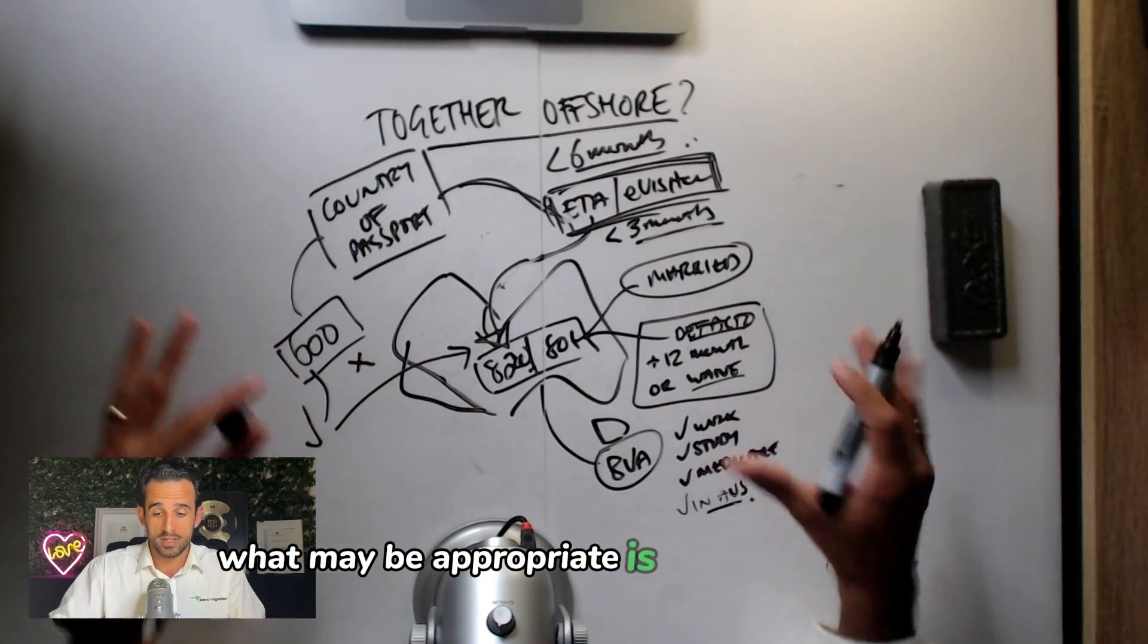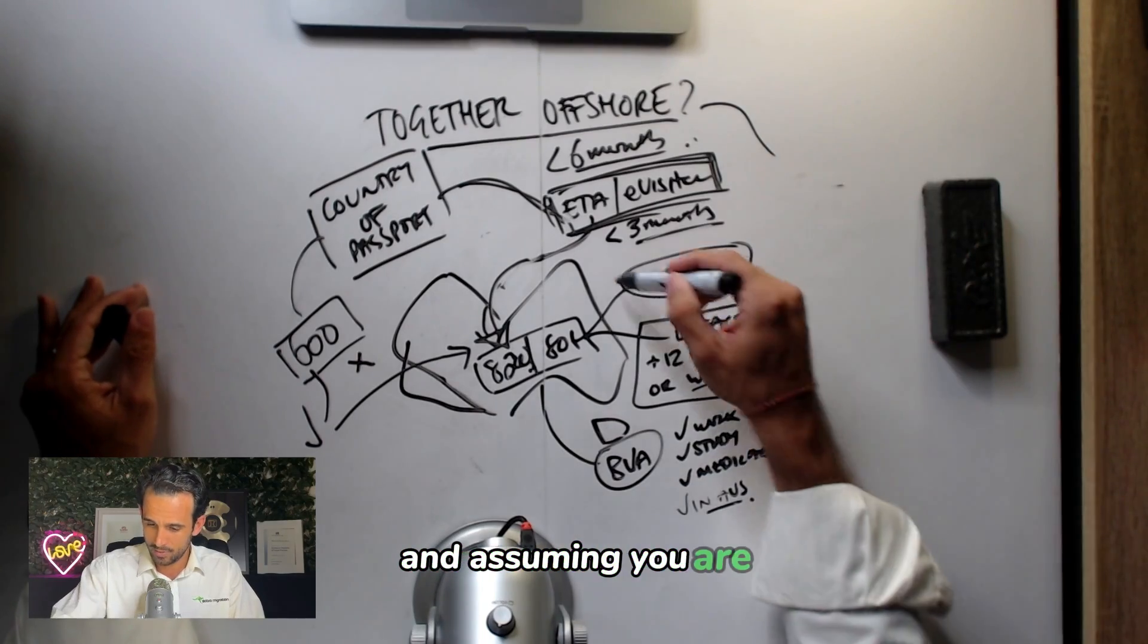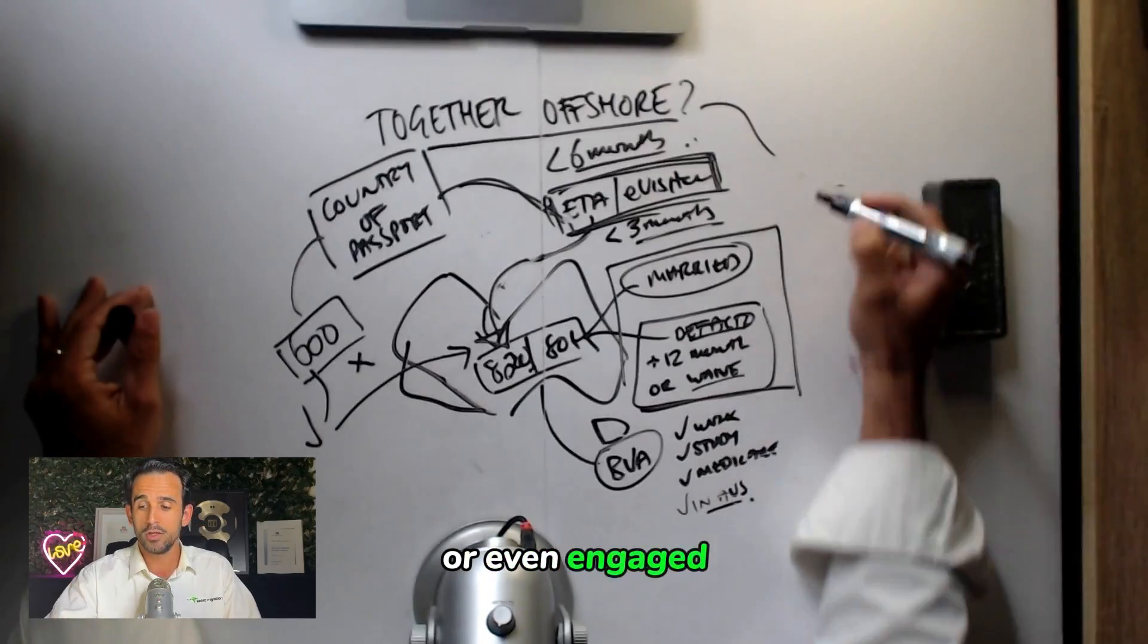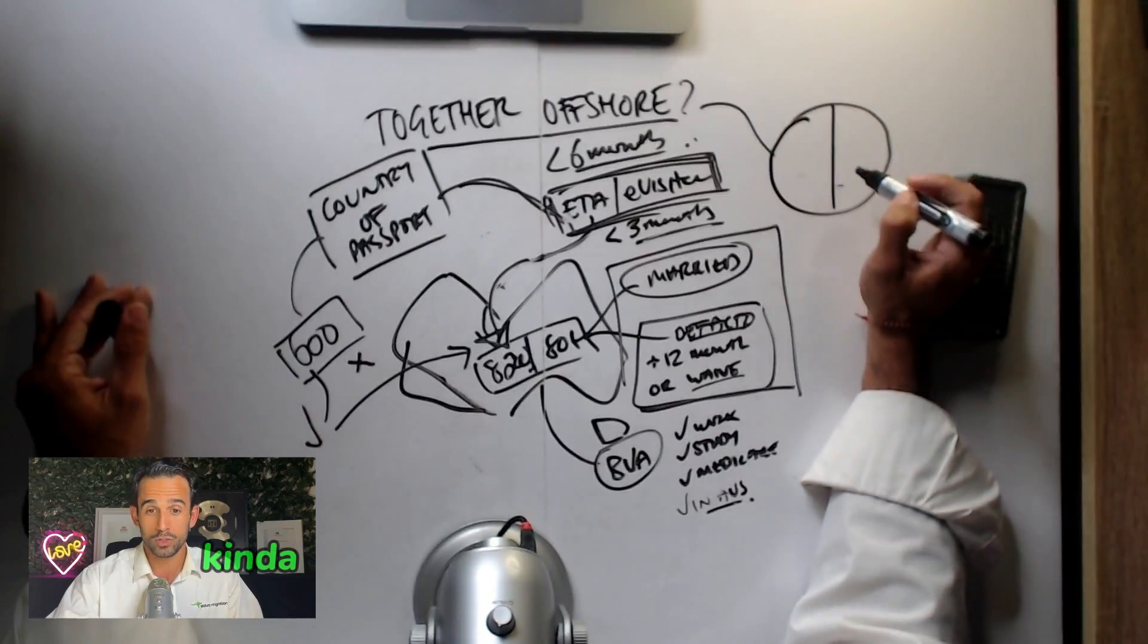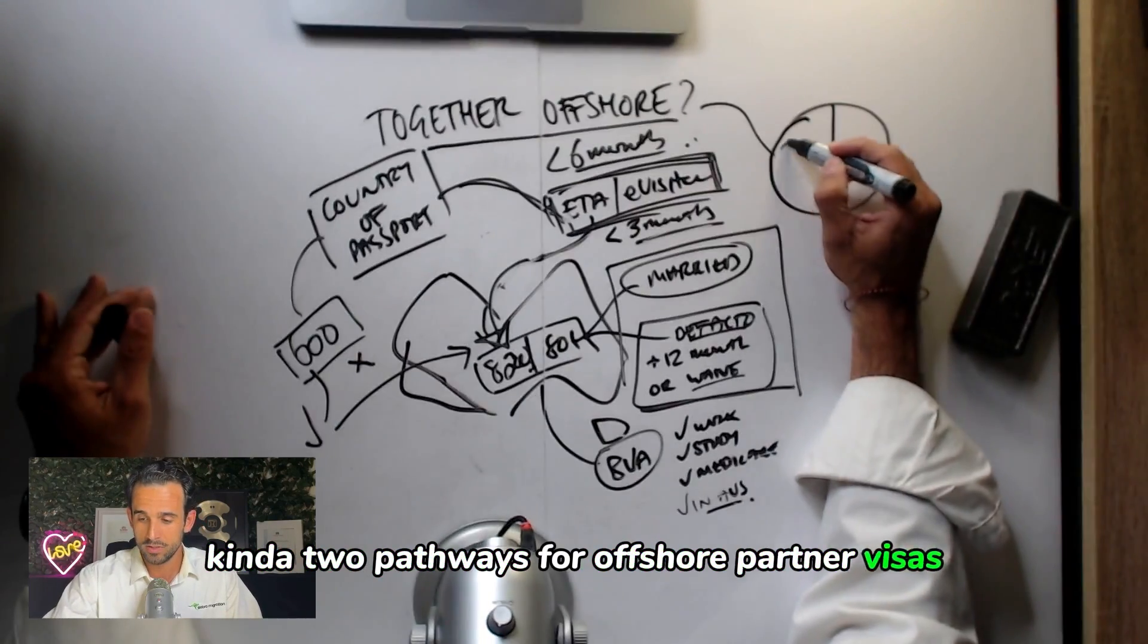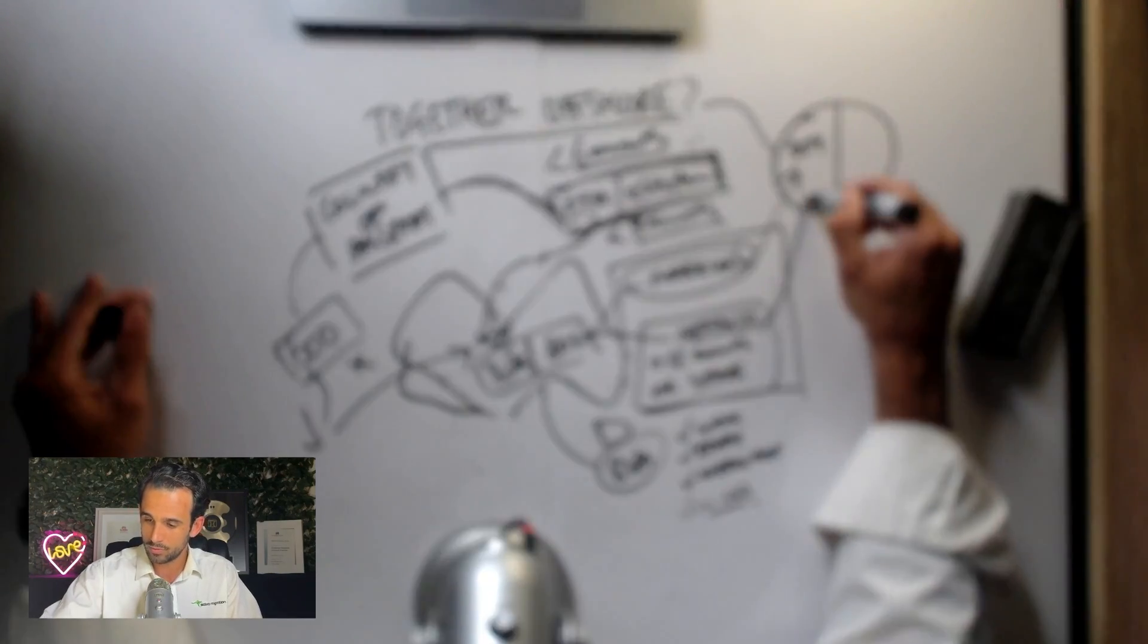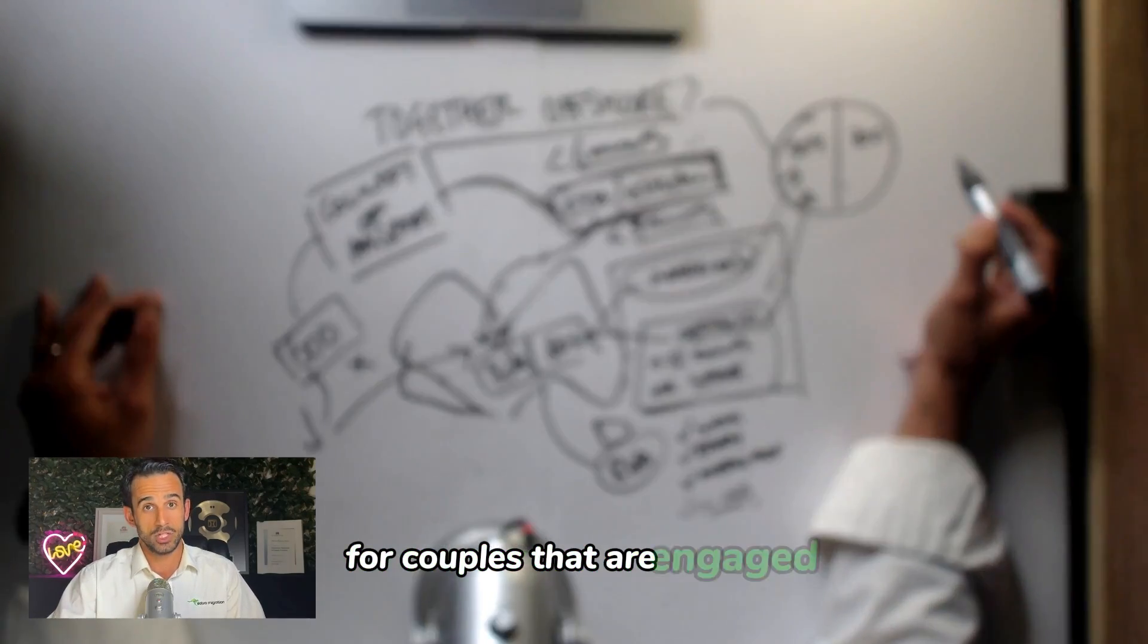What may be appropriate is to bypass all of this, and assuming you are in a married or de facto relationship, or even engaged, you would apply for an offshore partner visa. Now there's really kind of two pathways for offshore partner visas. There's the 309 for couples that are de facto or married, and then there's the prospective marriage visa for couples that are engaged.